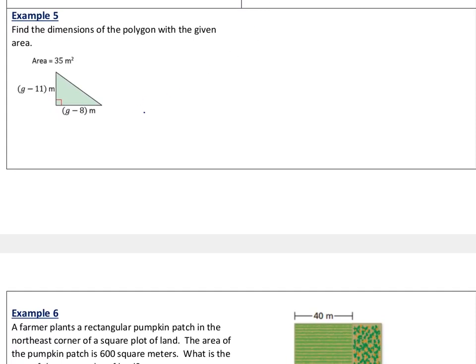Example number 5, same concept, but now we're working with a right triangle. Area of a triangle is 1/2 times the base times the height. Here my base is g minus 8, my height is g minus 11, and my area is 35. I'm going to show you a little pro tip. Because a lot of our geometry formulas have fractions involved, it's a very good idea to get rid of the fraction first. If I multiply both sides by 2, multiplying by the reciprocal will cancel out that fraction.